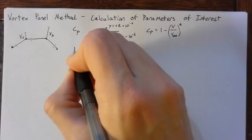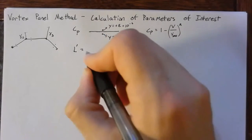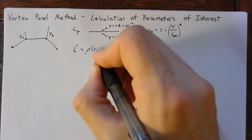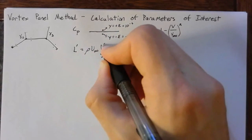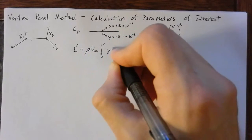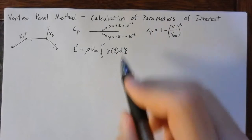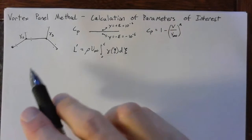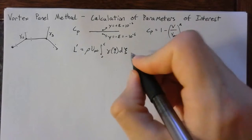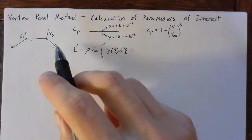Next, we're usually interested in the lift per unit span. And this is going to be rho times u infinity times the integral from 0 to C of our gamma of psi d psi. So this is just straight from thin airfoil theory. Now using the vortex panel method, what we get to do is we get to split this integral up over each of the panels.